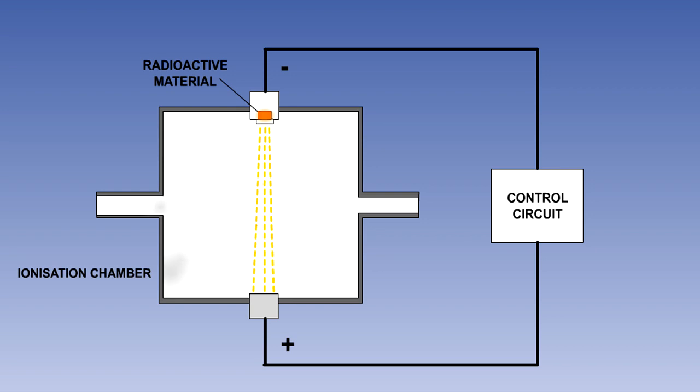When smoke enters the ionization chamber, it disrupts this current. The smoke particles attach to the ions and neutralize them. The smoke detector control circuit senses the dropping current between the plates and produces a warning.